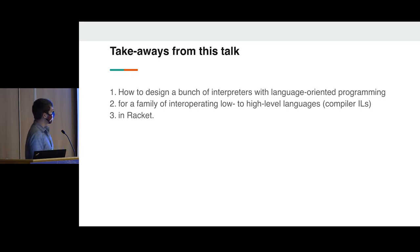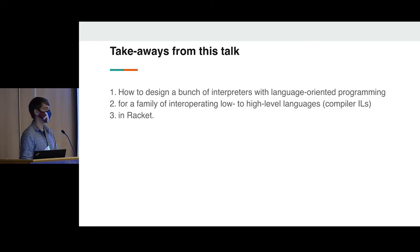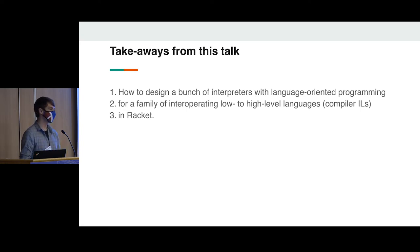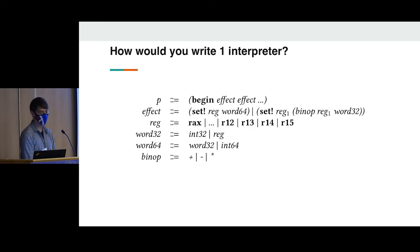The takeaways from this talk: I'm going to talk about language-oriented programming — how do we design a bunch of interpreters using language-oriented programming for this family of low-level to high-level compiler intermediate languages? They all have to interoperate, a whole spectrum of them, and how to do this in Racket in particular. I'm mostly going to focus on one and three, and give you a little bit of an idea of some of the abstractions I implemented with this technique.